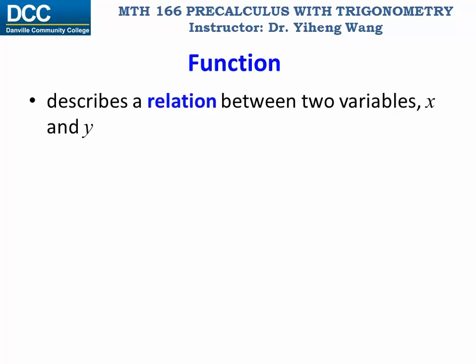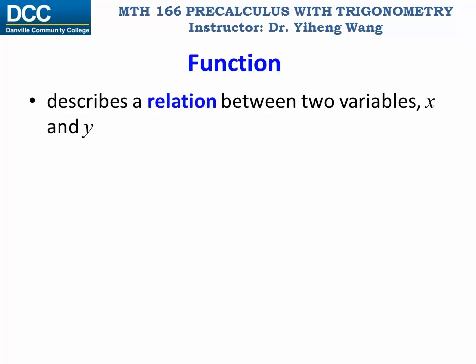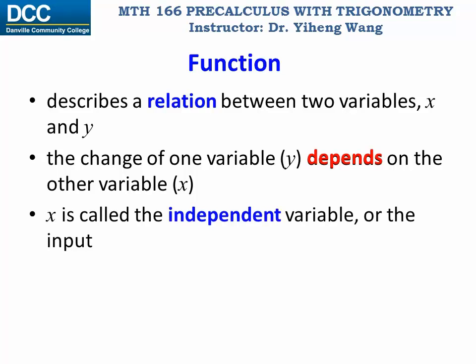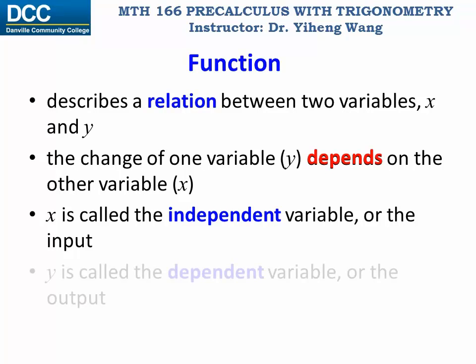A function is defined to describe a relation between two variables. The two variables are most commonly represented by x and y, although they can be other symbols or letters. To be called a function, this relation between the two variables must be that the change of one variable, normally y, depends on the other variable, normally x. Note that the key to the function is this depending relation. x is known as the independent variable, or the input, and y is known as the dependent variable, or the output.